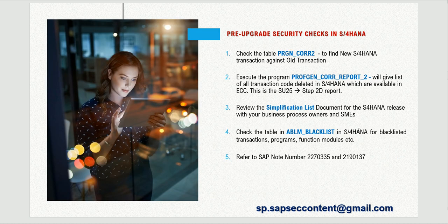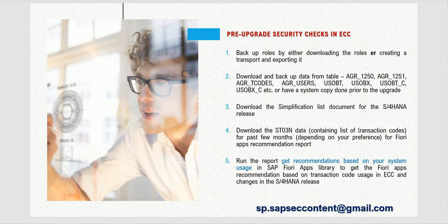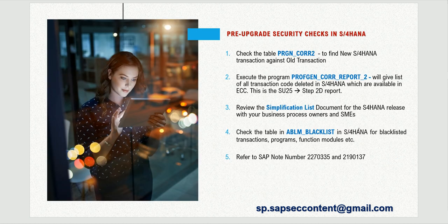Once the technical upgrade of S4HANA is done, let us discuss how the downloaded data — especially AGR_T_CODES and AGR_DEFINED — can be useful in S4HANA before you start anything in SU25. One of the steps involves the table PRGN_CORR2. When you take the transaction code data from AGR_T_CODES that you downloaded, this table will show which of those transaction codes have been replaced with new transaction codes in S4HANA.